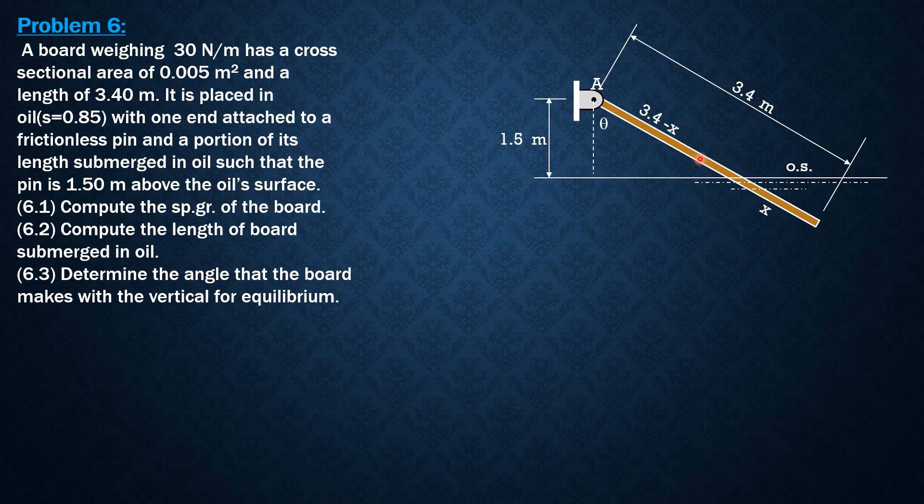The weight acts at the center of the board. Its distance from A is half of 3.4, so that is 1.7. And because I denoted this with theta, one of the requirements in the third question, the moment arm of this weight is equal to 1.7 sine of theta as indicated in the figure.